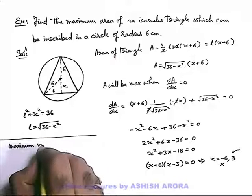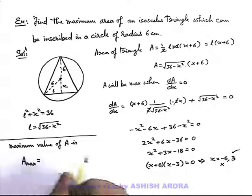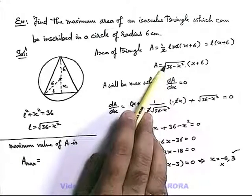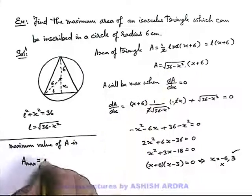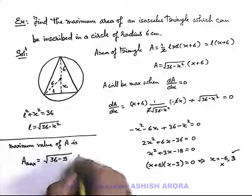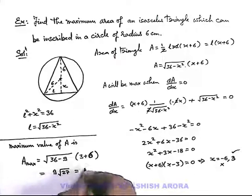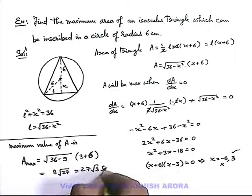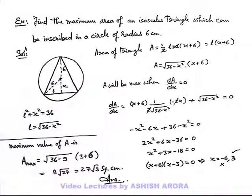The maximum value of A: putting x equals 3 gives root(36 minus 9) times (3 plus 6), which equals root(27) times 9, giving 9 root 27, which can be written as 27 root 3 square centimeters. This is the maximum area of an isosceles triangle inscribed in a circle of radius 6 cm.